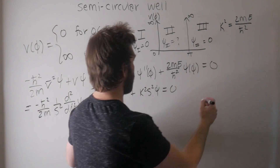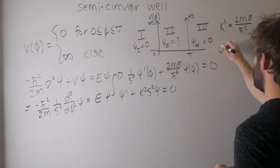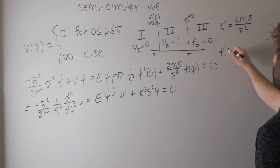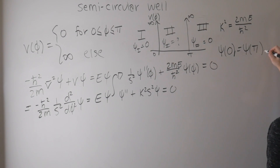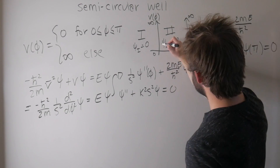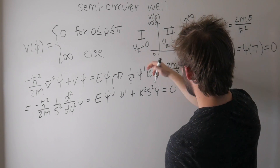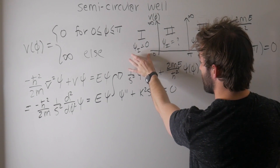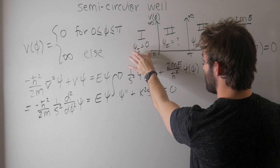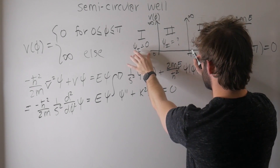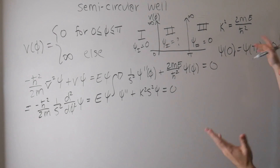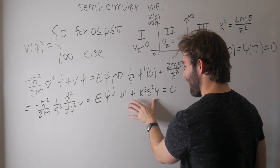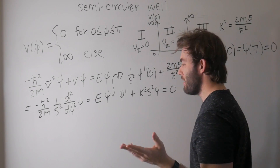We know we have periodic boundary conditions. So we have psi of zero equals psi of pi equals zero, because the wave function has to be continuous here. The only way for that to happen — if the particle can't be found outside — is for the wave function at our boundaries to vanish, which gives us these boundary conditions. So we've got our textbook periodic differential equation.